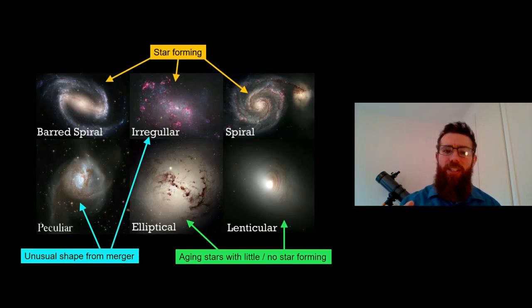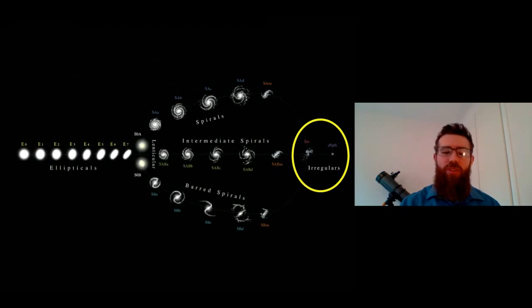But the irregular galaxies sit there with the spirals because they've got younger stars, they do have star formation in them as well. But with the spirals and the ellipticals you can actually have a classification for them too, you can give them a particular type or classify them a little bit further.